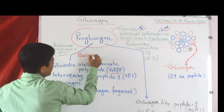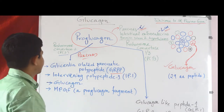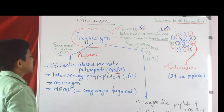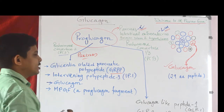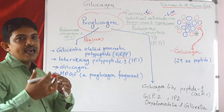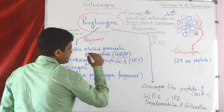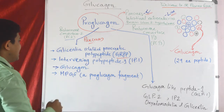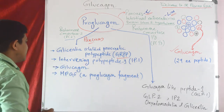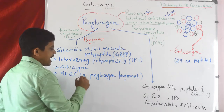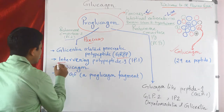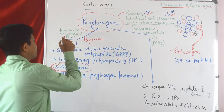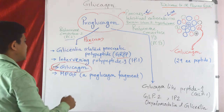In the pancreatic alpha cells, in the presence of the PC2 enzyme — prohormone convertase 2 — proglucagon converts into different hormones and fragments. These include GRPP (glycentin-related pancreatic polypeptide), intervening polypeptide 1 (IP1), MPGF (a major proglucagon fragment), and mainly glucagon.